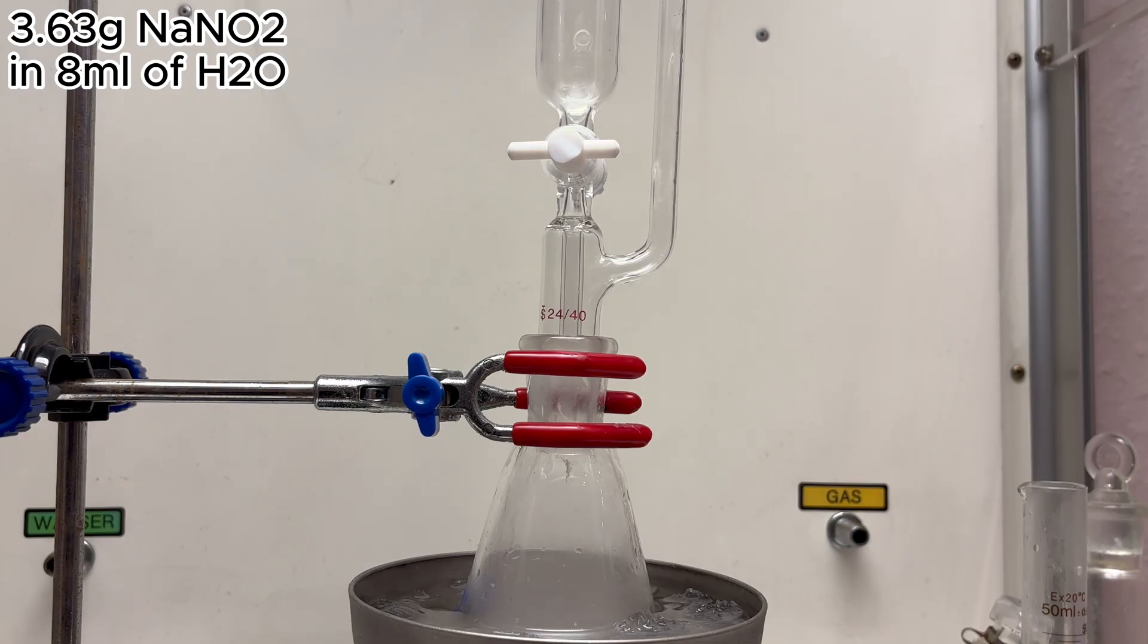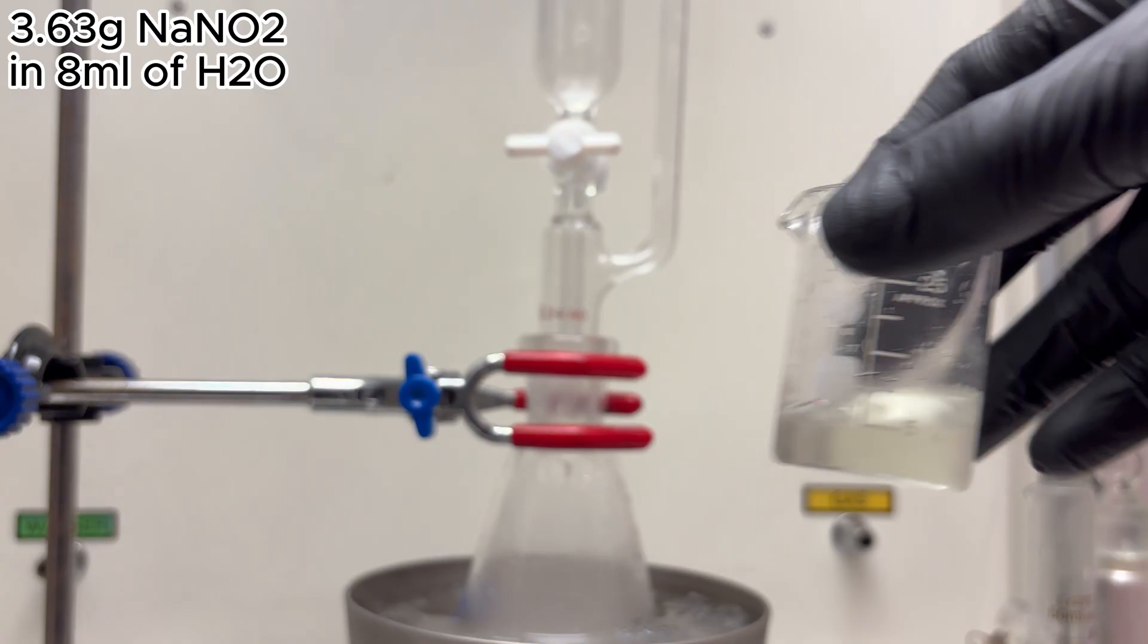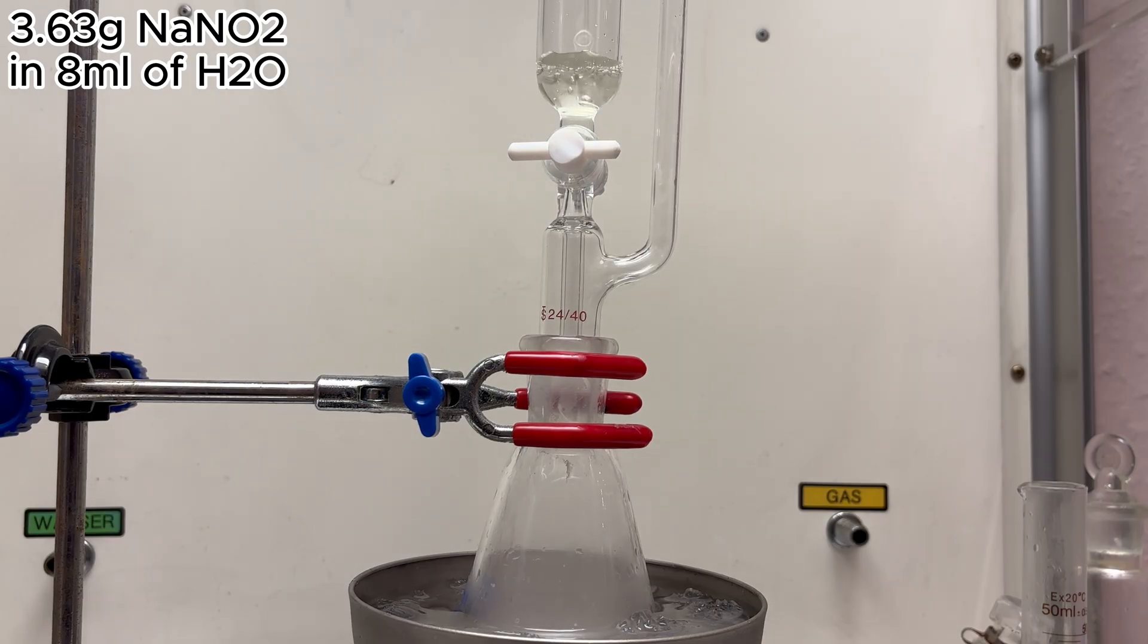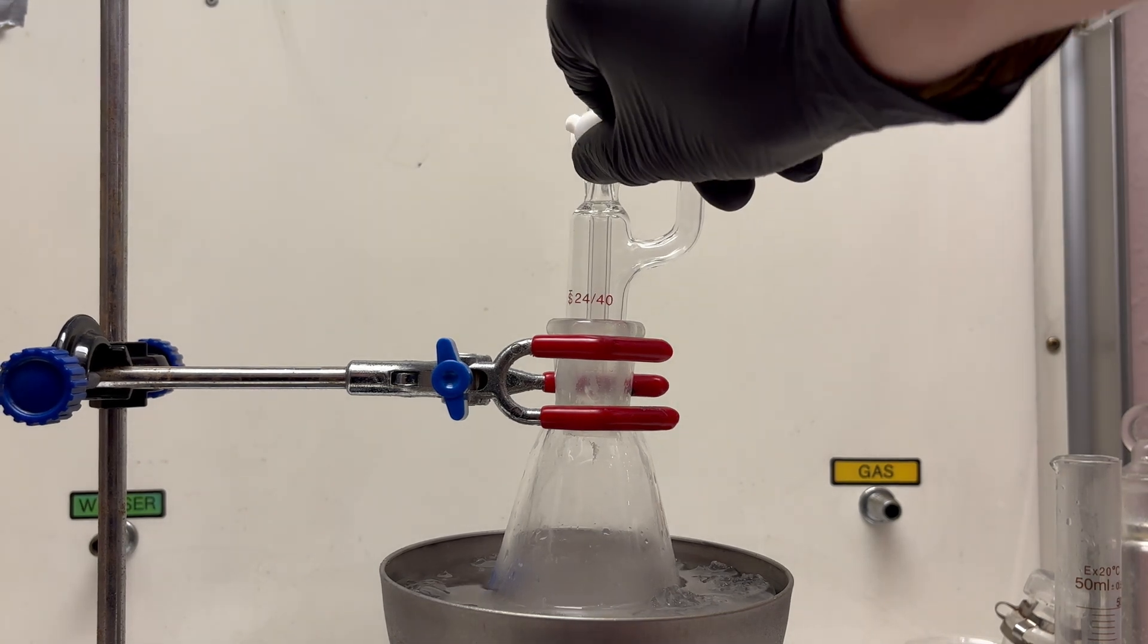Now we will add a solution of sodium nitrite into an addition funnel and let it drip into the reaction mixture very slowly. It's important to hold the reaction mixture at 0 to 5 degrees Celsius.